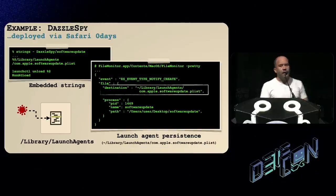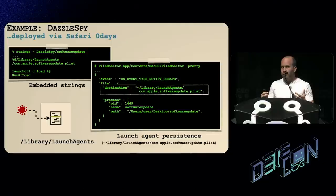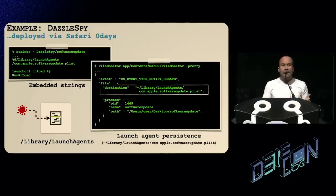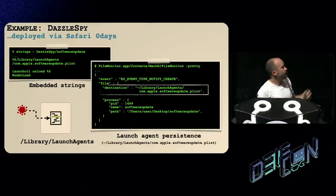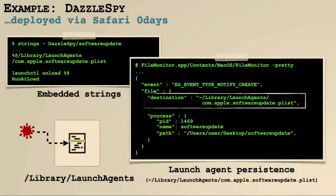A brief example: DazzleSpy was deployed via zero-day Safari bugs — a very powerful deployment mechanism. Users browsing to a site could inadvertently be infected via zero-days even if their system was fully patched. If we look at the embedded strings for DazzleSpy, we can see something related to a launch agent — another persistence method. If we run a file monitor and execute the malware in a virtual machine, we can passively observe it persisting itself as a launch agent. So even if we can't detect the zero-day exploitation, as soon as the malware goes to persist and we detect that, we can alert the user and maybe stop the infection.